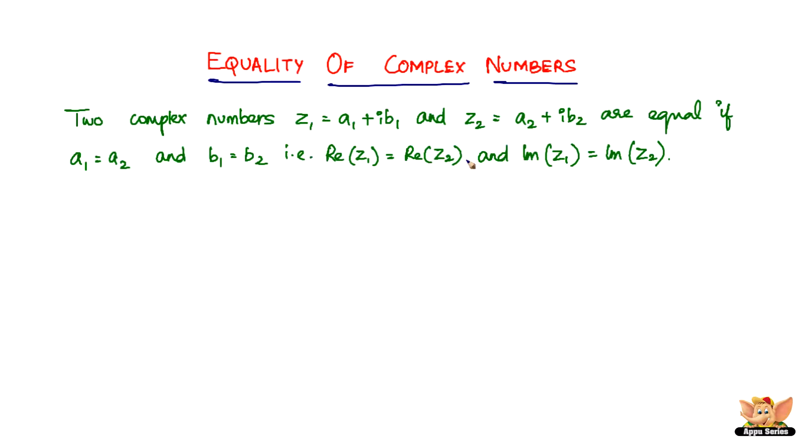If this condition is satisfied, then two complex numbers are said to be equal. Before we conclude this video, let us quickly solve an example problem which illustrates the equality of complex numbers.